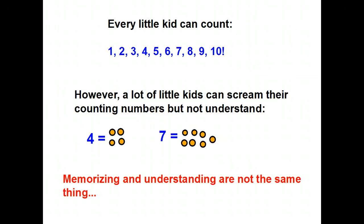Every little kid can count 1, 2, 3, 4, 5, 6, 7, 8, 9, 10. But when you sit down with those little kids and ask them to give me five things or give me three things, they just look at you funny or they just hand you a bunch of something. A lot of kids can recite their counting numbers but they don't understand that four means four things or seven means seven things.